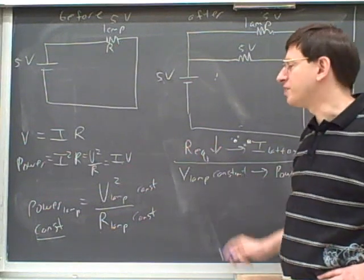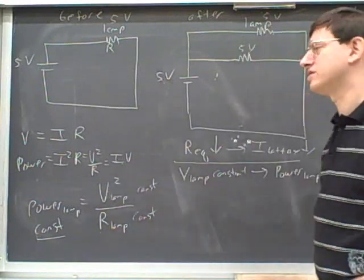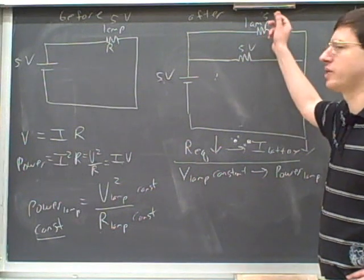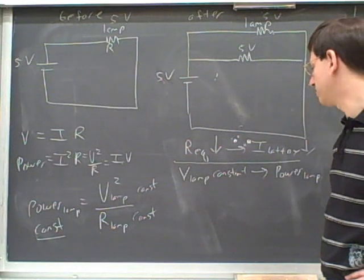The main thing that confused you there is you started by saying that the equivalent resistance of the whole that the battery sees is going down. But then I think you started trying to apply that directly to the lamp. So we need separate equations. I think that's pretty tricky. Unfortunately, we never really had time to do as much practice as we could have on this earlier. But you're pretty sure to see a question like this in the test. This is good to review now.